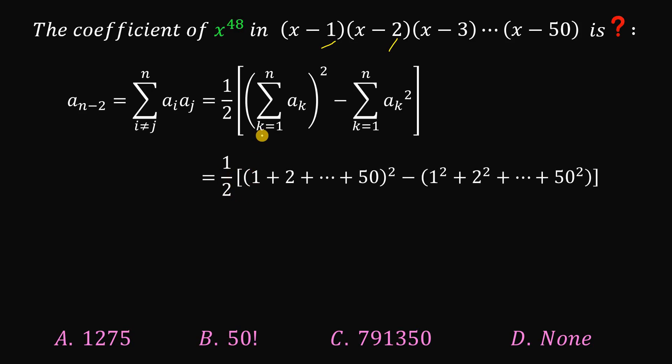So we have 1 half multiply the sum of the roots. We have 1 plus 2 plus 3 all the way down to 50 raised to the power of 2 minus the sum of the squares of the roots, which is 1 squared plus 2 squared up to 50 squared.